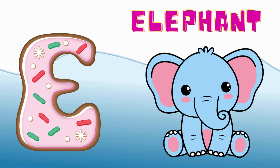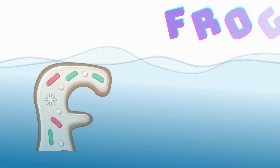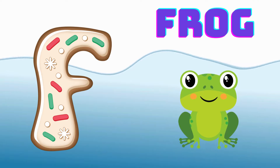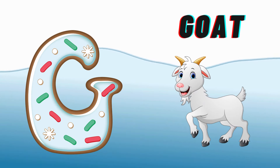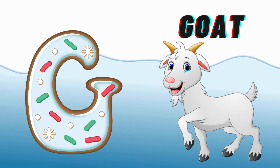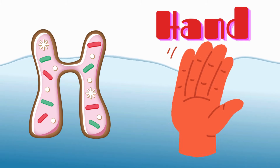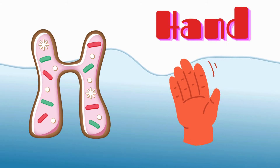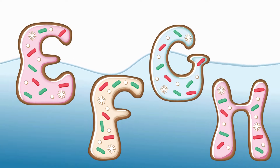E is for Elephant, E-E-Elephant. F is for Frog, F-F-Frog. G is for Goat, G-G-Goat. H is for Hand, H-H-Handle.